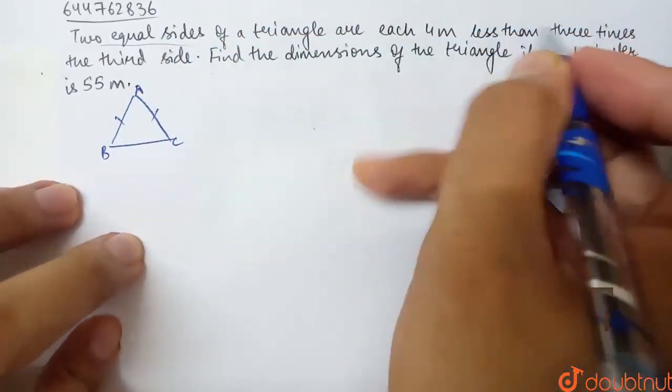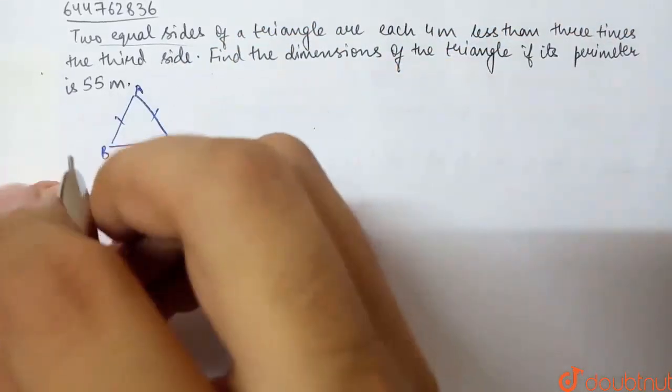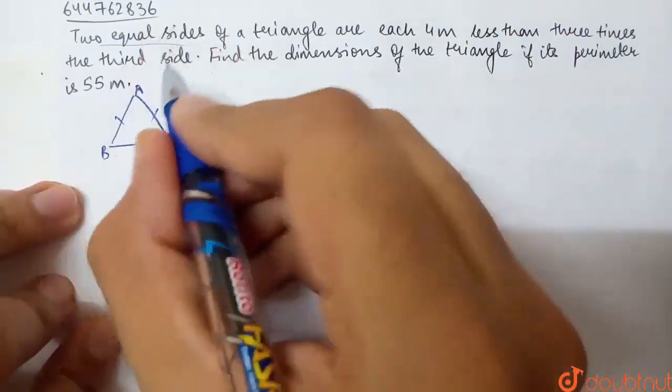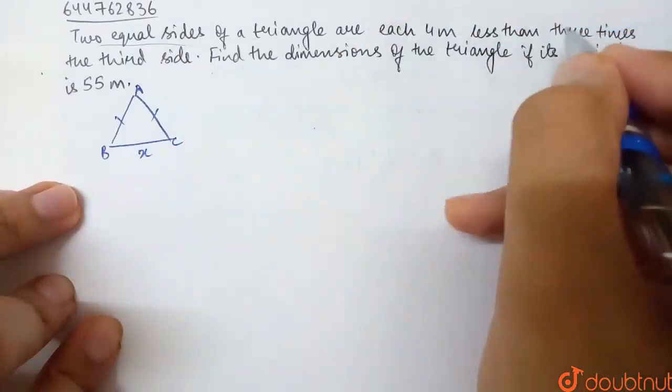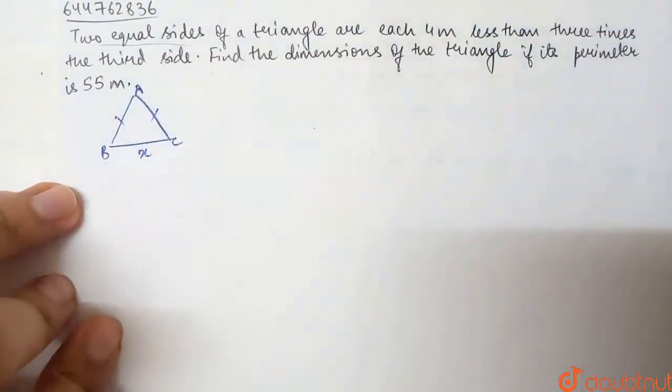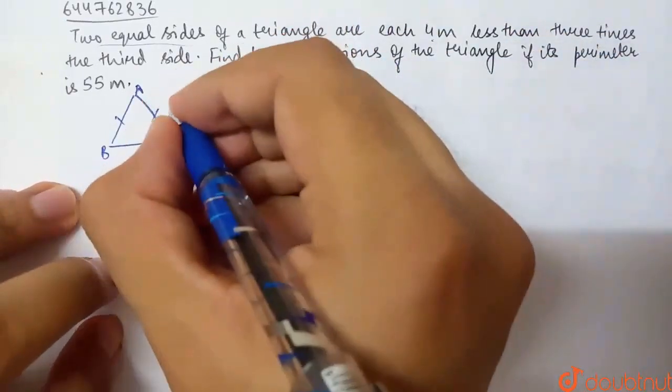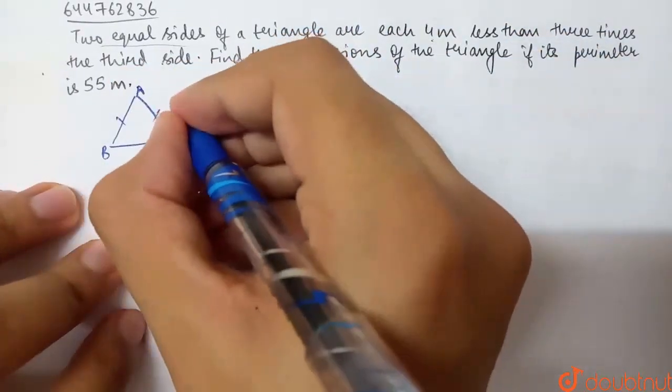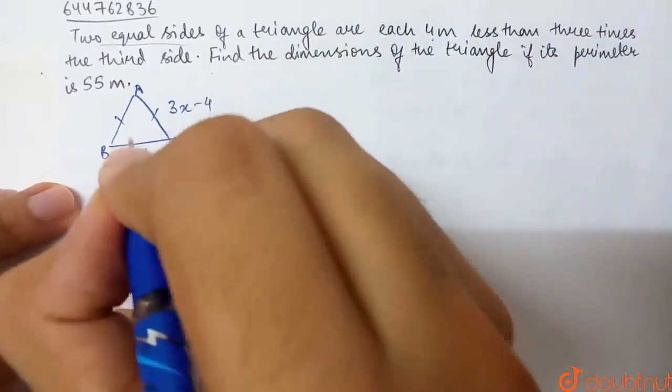It's 4 meters less than 3 times the third side. This is my third side. If I take x, the other two equal sides are both the same. What is it? 4 meters less than 3 times the third side. So 3 times the third side - third side is x, then 3 times the third side is 3x. And 4 meters less, so it will be 3x minus 4.